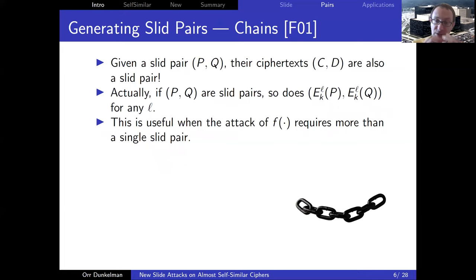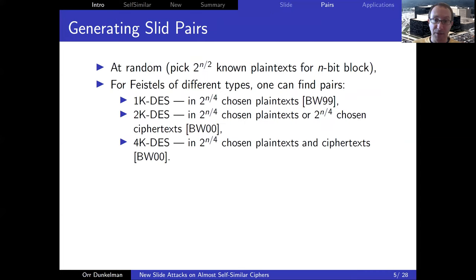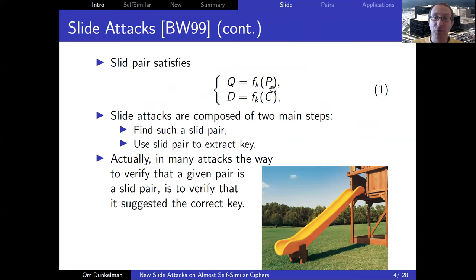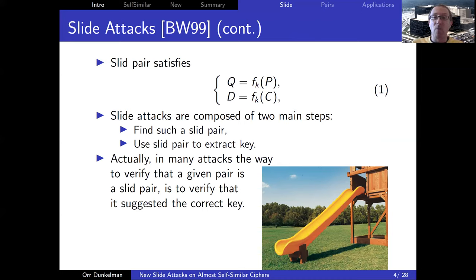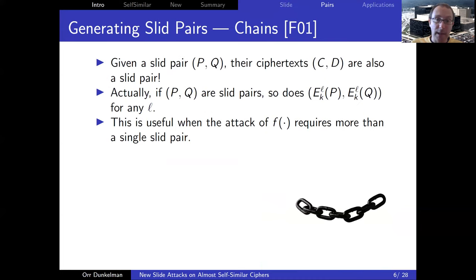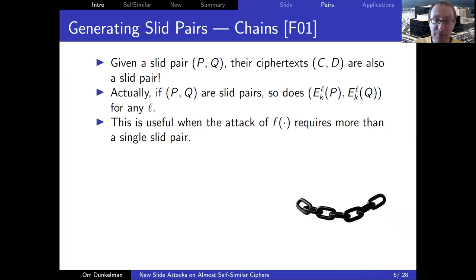The advantage of the slide chain concept is that now we don't need to attack the round function using only two plaintexts. Sometimes you need more data, and this is why we need slide chains to generate more inputs to the round function. If something is a slide pair, you automatically get a slide chain, which is very useful. One small technical comment: this makes it an adaptive chosen plaintext and ciphertext attack, which some people are less likely to use.